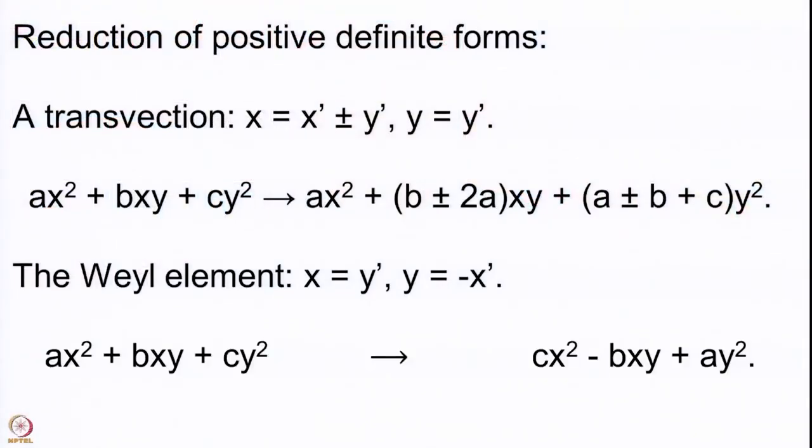We proved in the last lecture that every positive definite form is equivalent to a reduced form. Before we go to the main proof, let me quickly recall the very important transformations we have introduced.